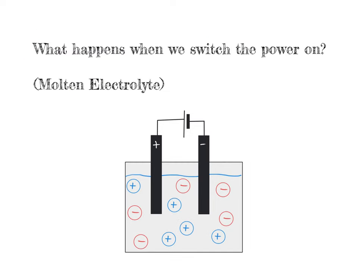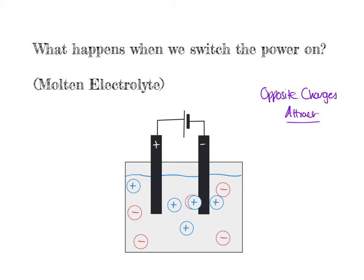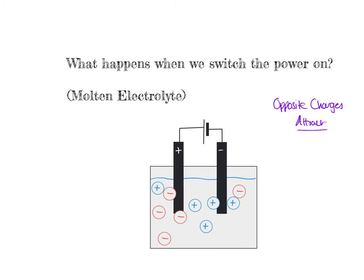Let's have a look at what happens when we actually switch the power on. At the moment I've highlighted a positive electrode and a negative electrode. They're not actually charged because the power supply is not switched on yet. When I do switch the power supply on, this one will become positively charged — our anode — and this one will become negatively charged — the cathode. The standard rule is that opposite charges attract, and that is essentially all electrolysis is. So the positive ions move towards the negative electrode and the negative ions move towards the positive electrode.